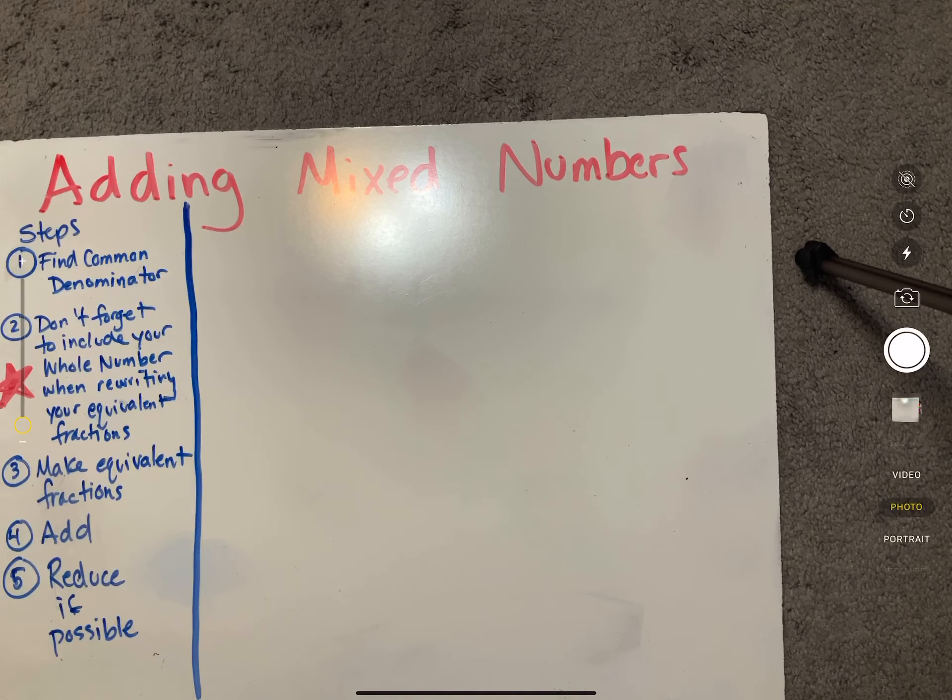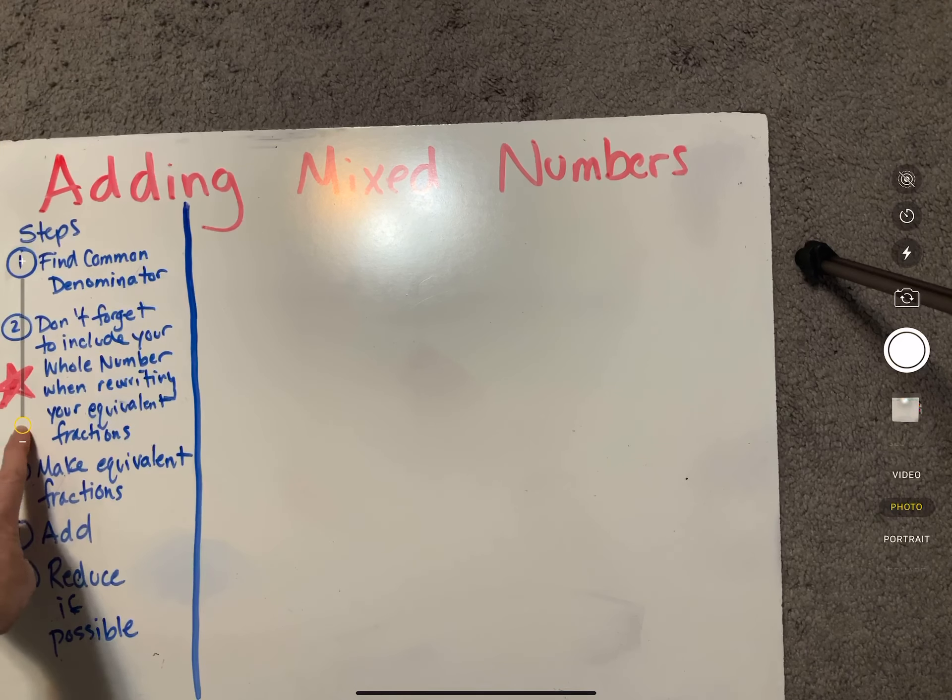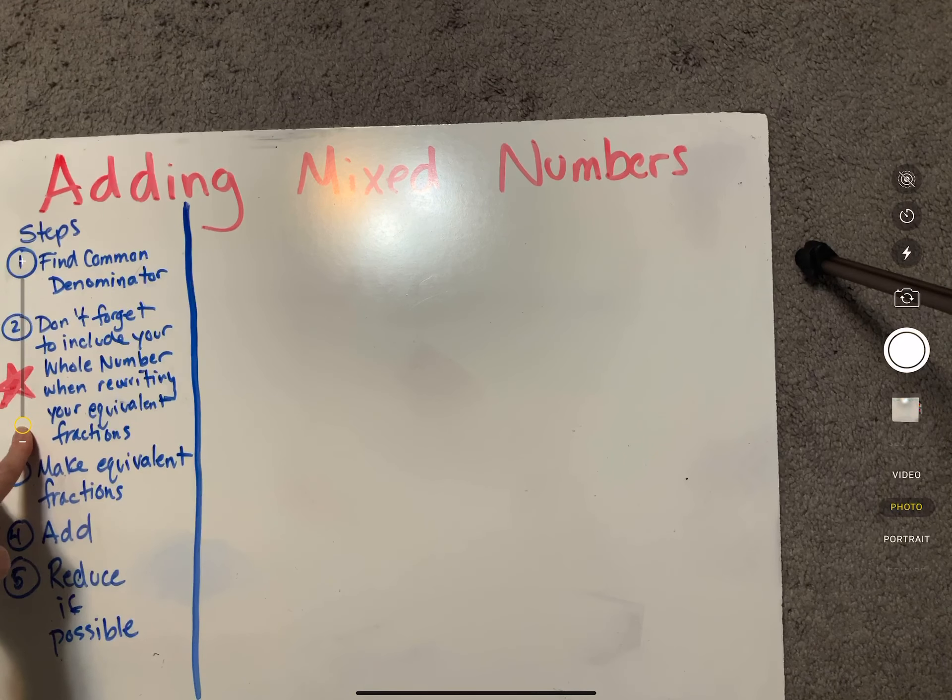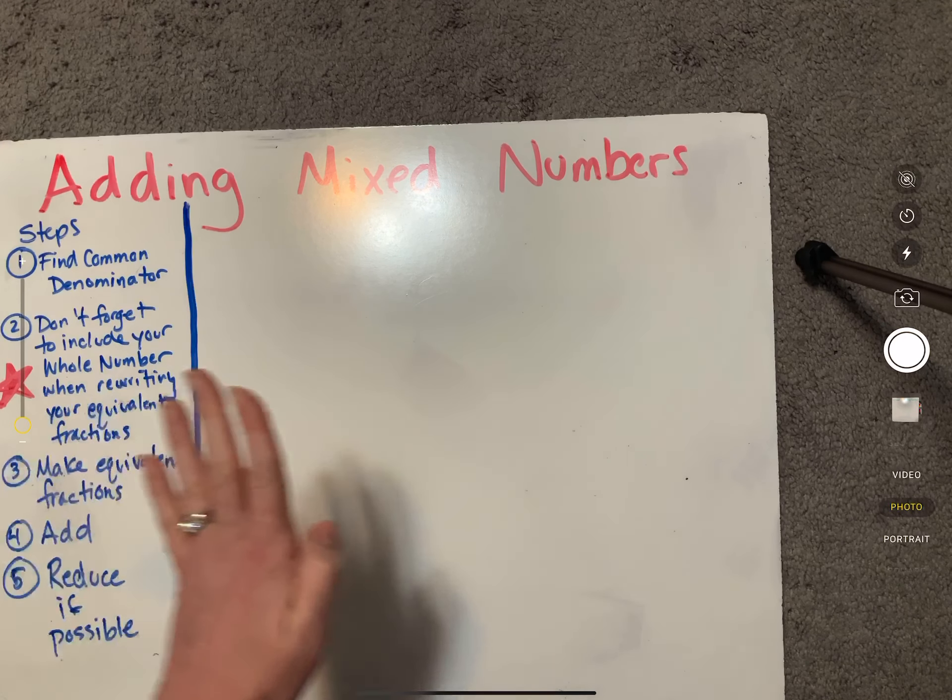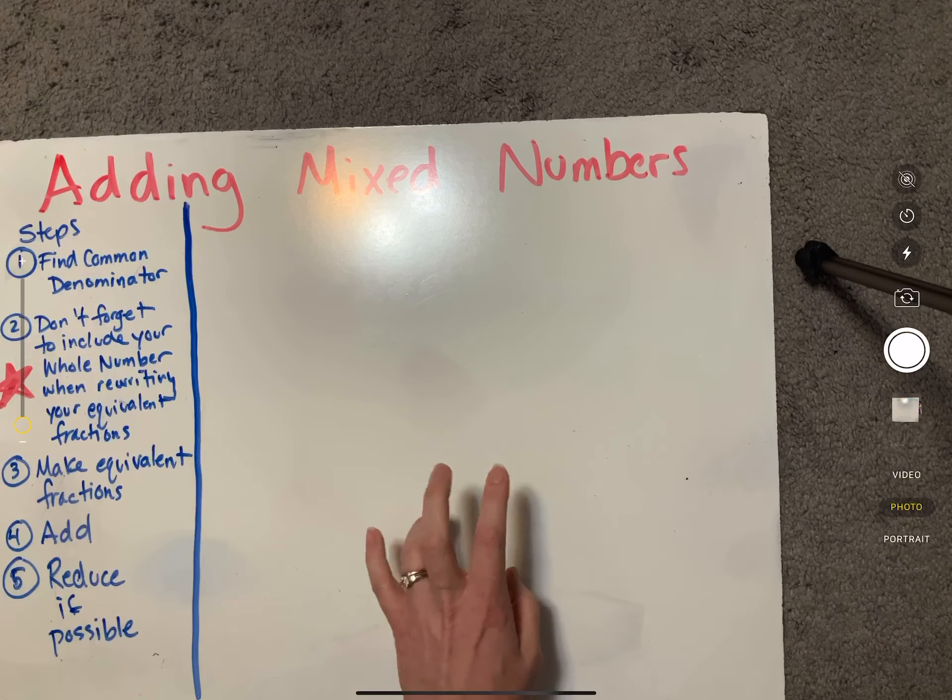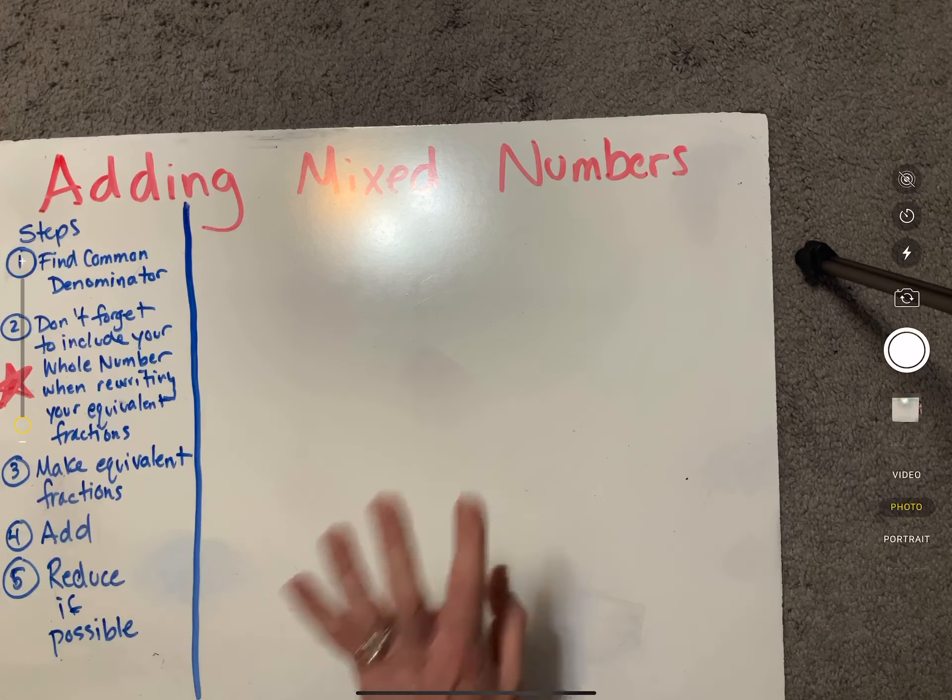Our steps are going to be really similar to adding regular proper fractions, but there is a starred part here that is really important. The only difference is that you need to make sure that your whole number is included as you write your equivalent fractions. I'll show you what I mean.